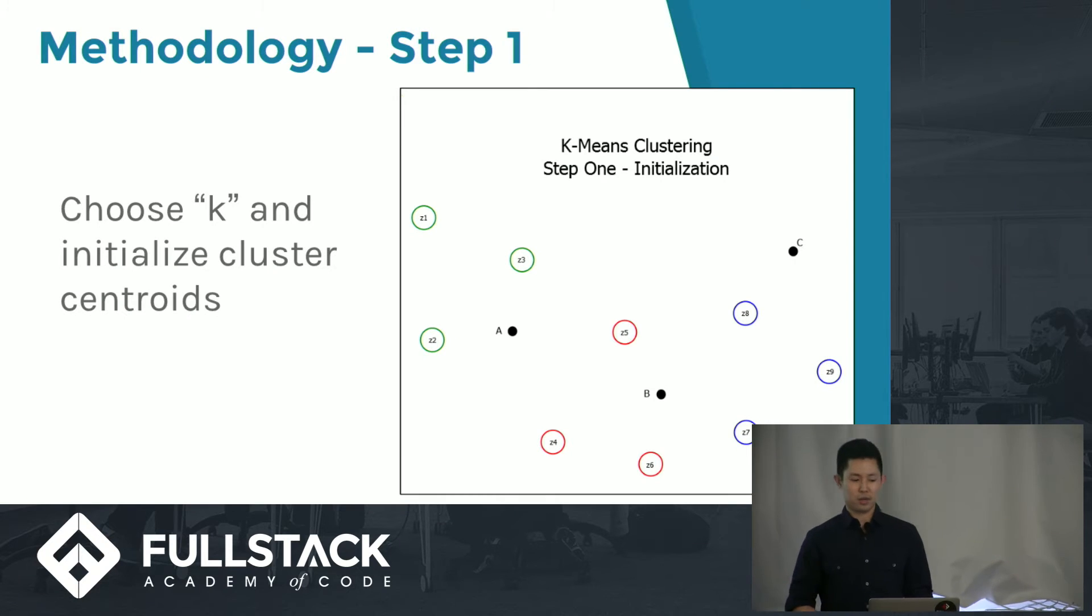Now, the methodology behind the K-means clustering algorithm. First, you're given a certain dataset. In this picture, you can see we have six data points.